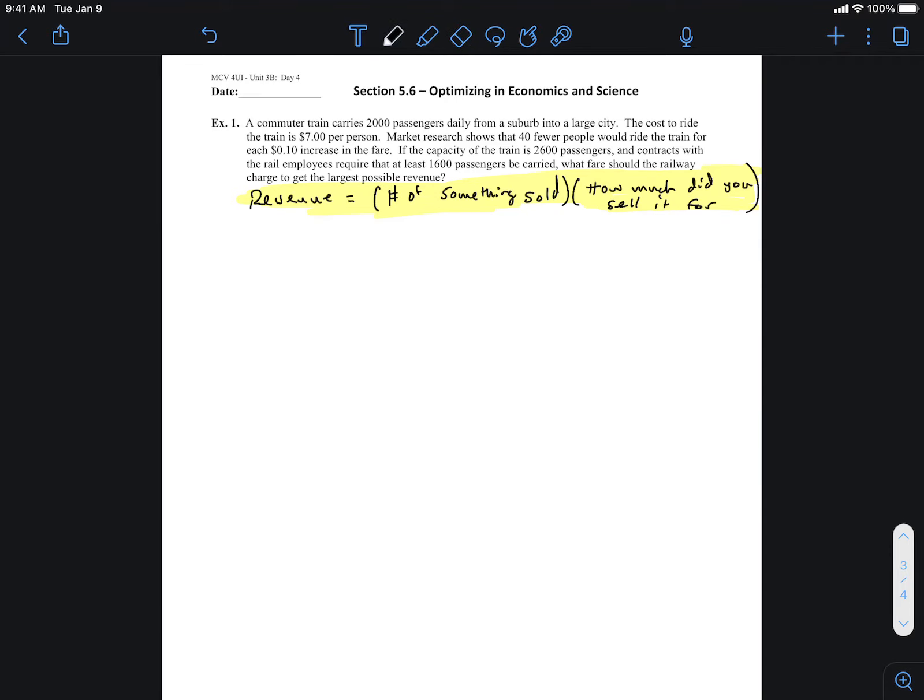When you do these questions as well, we need a variable. Something's changing here. What is that something? Well, it's the number of fare increases. How many times are we increasing by 10 cents? Not the 10 cents specifically, but it's the number of times that we increase. So this is pretty typical as well with these kinds of questions. We can always say let X represent the number of fare increases.